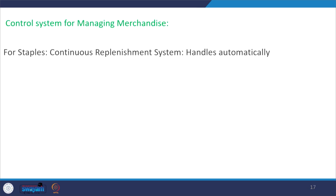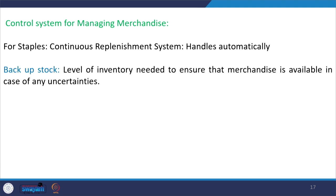The control system for managing merchandise for staples uses a continuous replenishment system. When stock reaches the minimum threshold level, orders are placed automatically. You also take account of backup stock — the level of inventory needed to ensure merchandise is available in case of uncertainties.